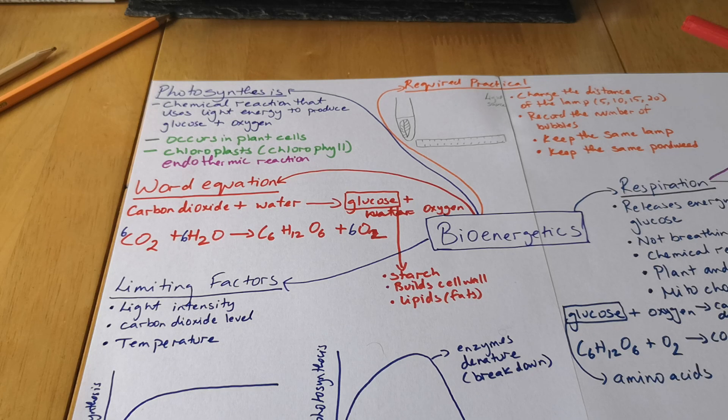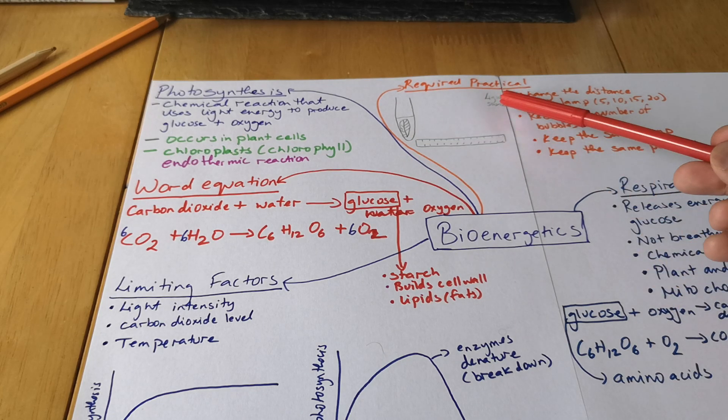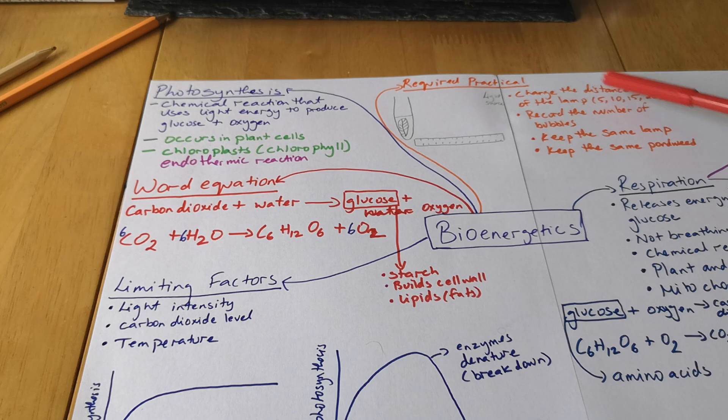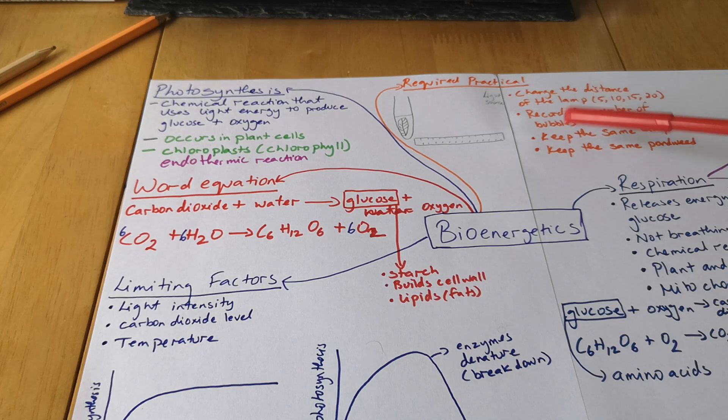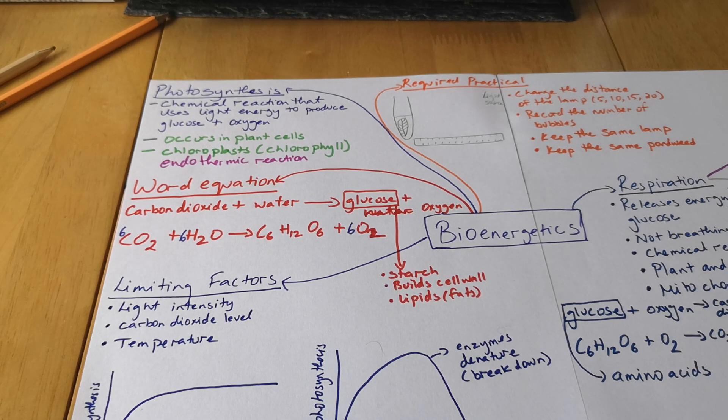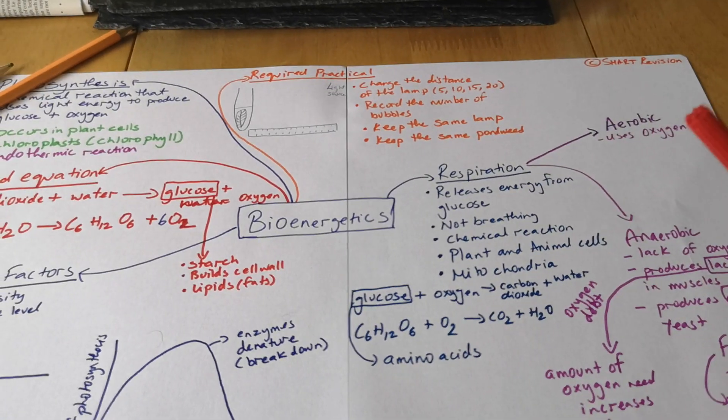Now there's a different version of this required practical where you will be asked to change the wavelength of the light. So in that case you will have different light sources, so that's going to be an independent variable. The distance should be the same, you record the bubbles. So that would be a different version of it. Okay, something to keep in mind. Now the last thing is your respiration.